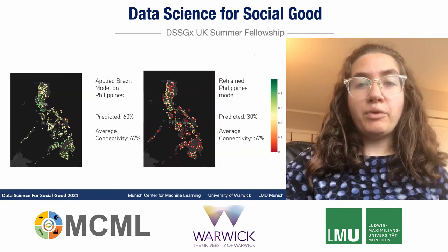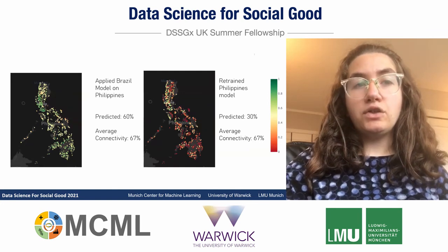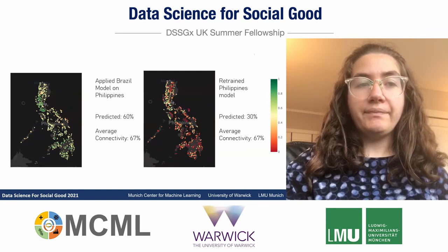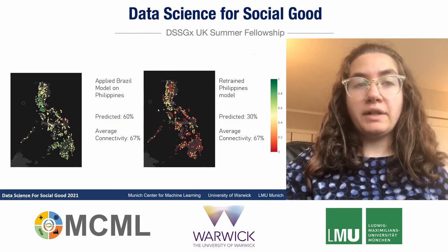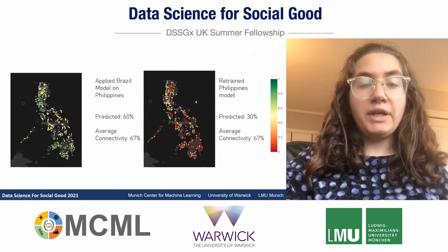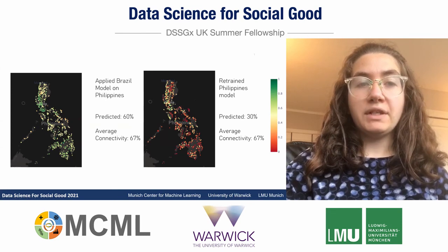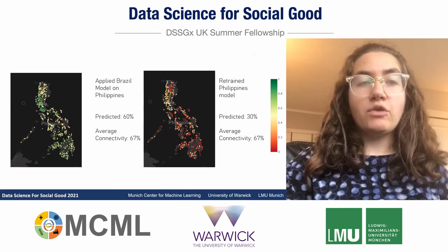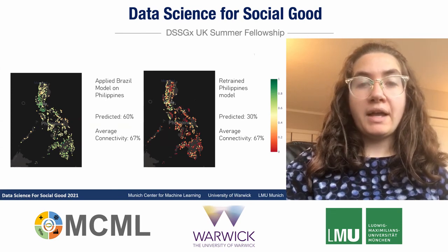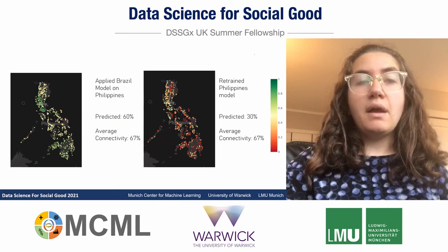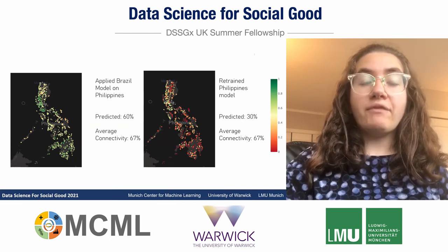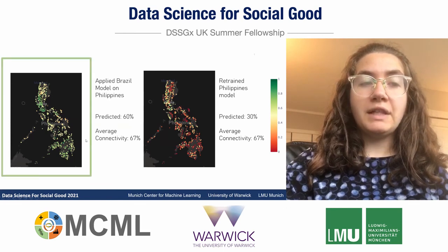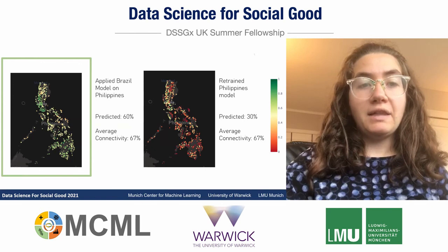We then applied our previous model and also trained a new model using the Philippines data. The average connectivity from the applied Brazil model is 60%, while the retrained model suggests 30% average connectedness. We found that the retrained Philippines model fits more accurately to the Philippines survey data, but the survey was conducted in 2019, and after discussing with our partners, they feel that the applied Brazil model is more precise with the current state of the internet in the Philippines.